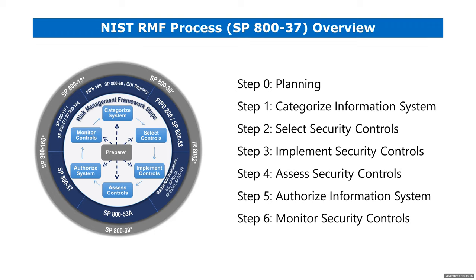Part of the process of achieving FISMA compliance and implementing NIST guidelines is to follow these six steps, which are in line with the RMF — the Risk Management Framework. Keep in mind there are other frameworks like the CSF — the Cybersecurity Framework — and others that NIST works on, but for this class we are focused on the RMF process.